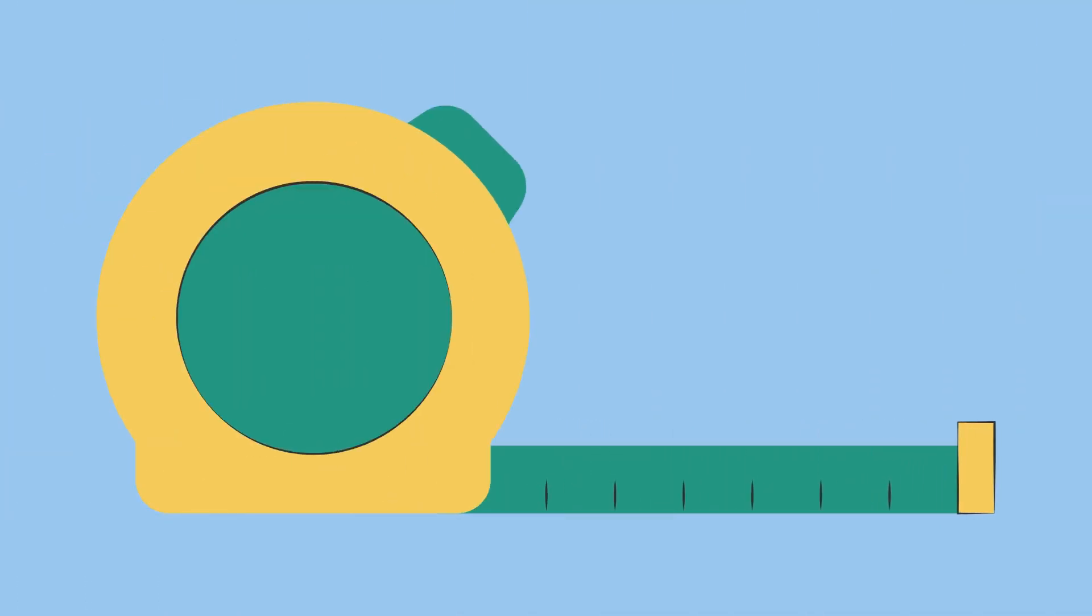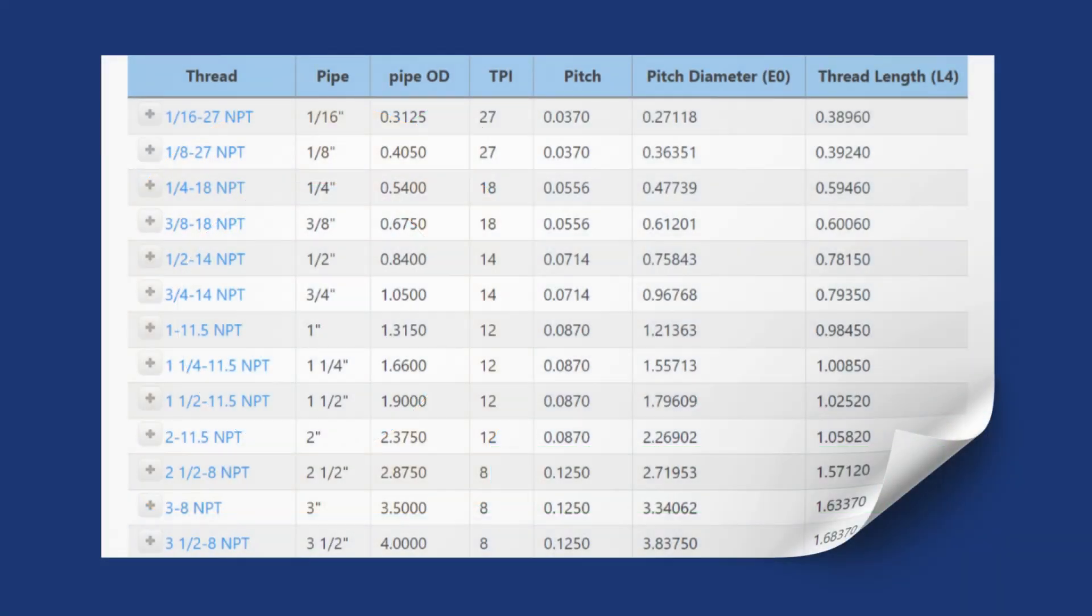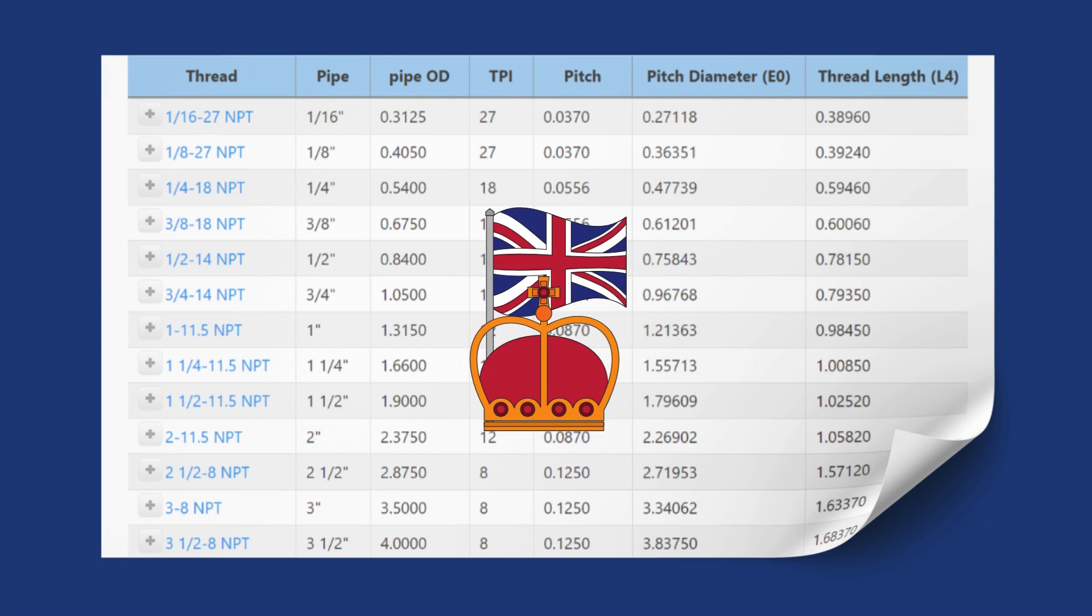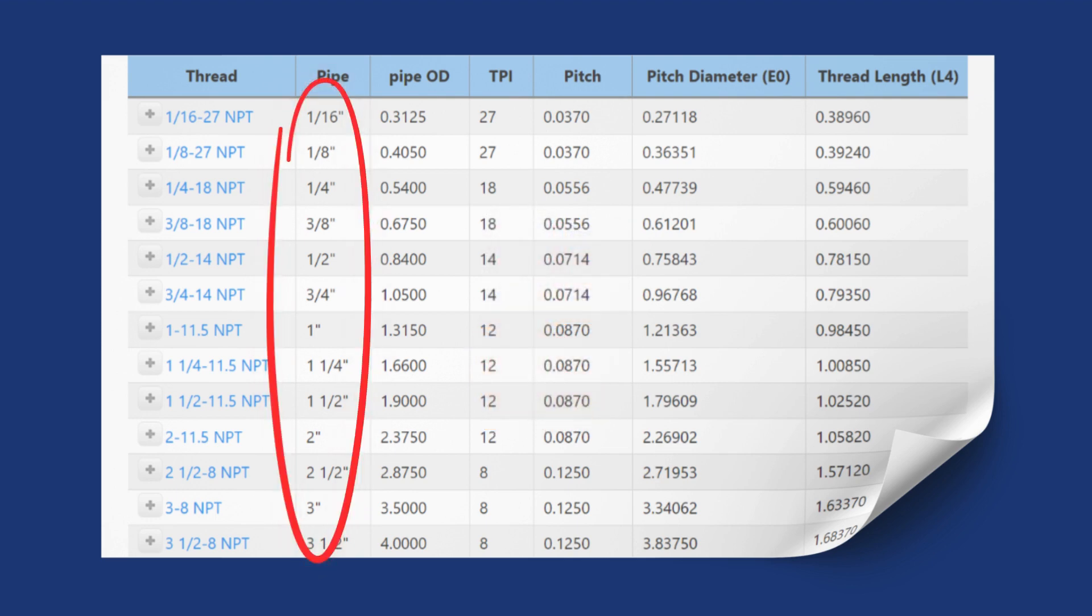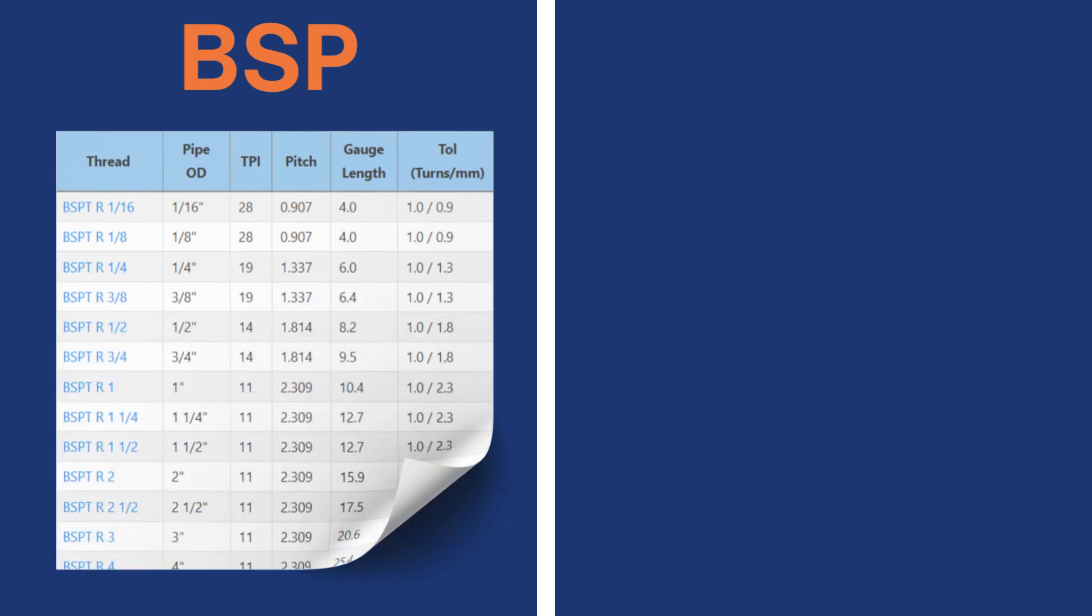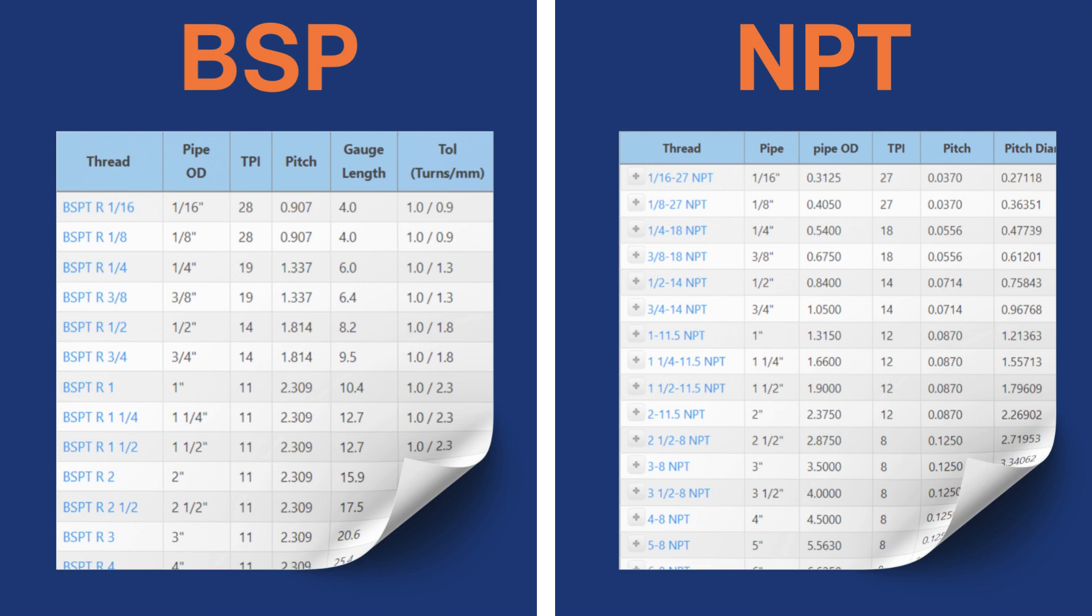Let's look now at how the measuring units are handled. Both BSP and NPT are imperial standards, and the nominal sizes in both are listed in inches. However, the BSP standard defines the dimensions and tolerances in millimeters, while NPT uses inches.